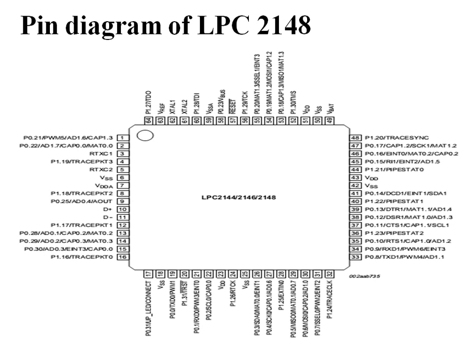Port 1 pins from 1.0 to 1.15 are reserved for future versions of the LPC 2148, so only Port 1.16 to 1.31 are active. This means Port 0 provides 32 pins and Port 1 provides 16 active pins, giving a total of 48 usable GPIO pins out of 64.